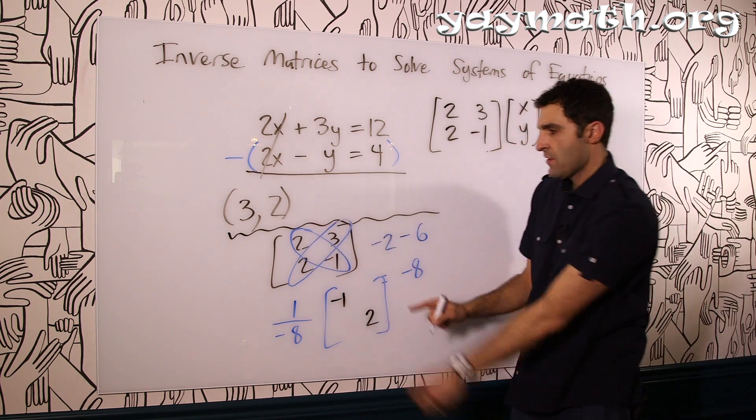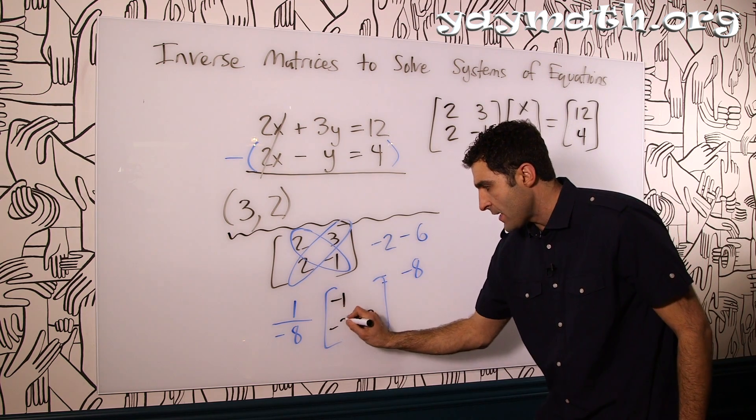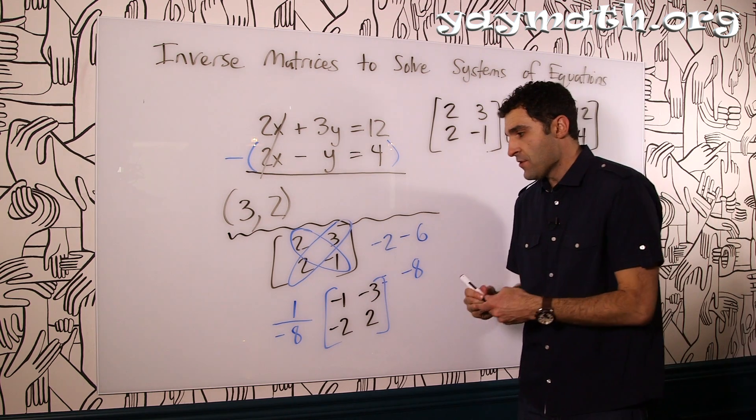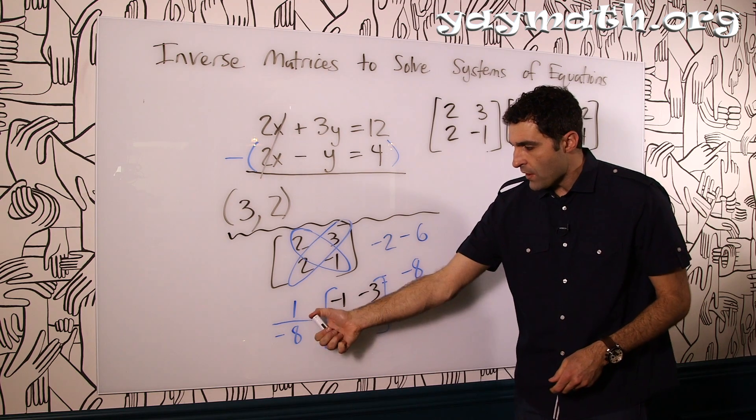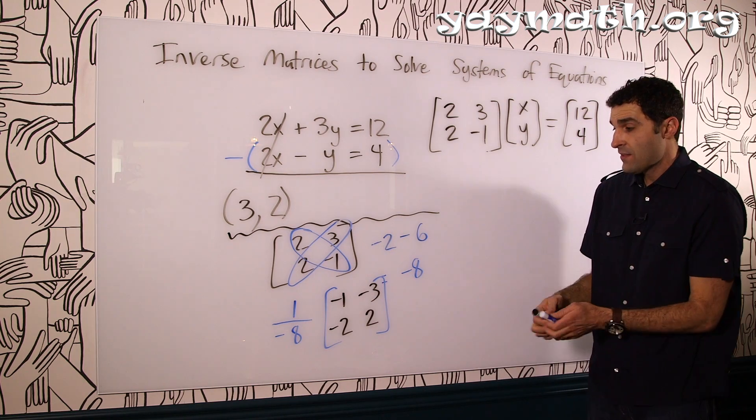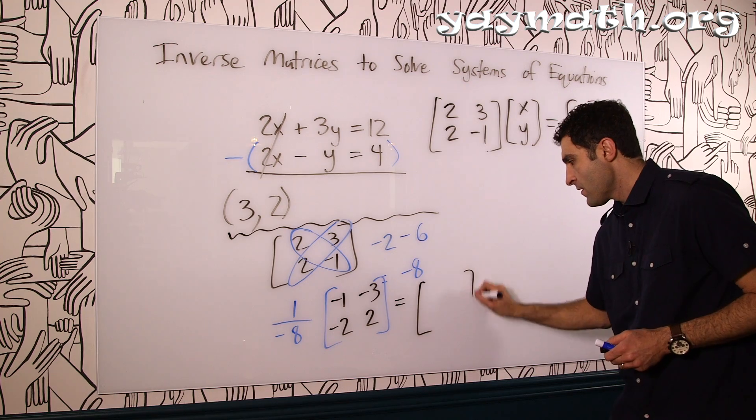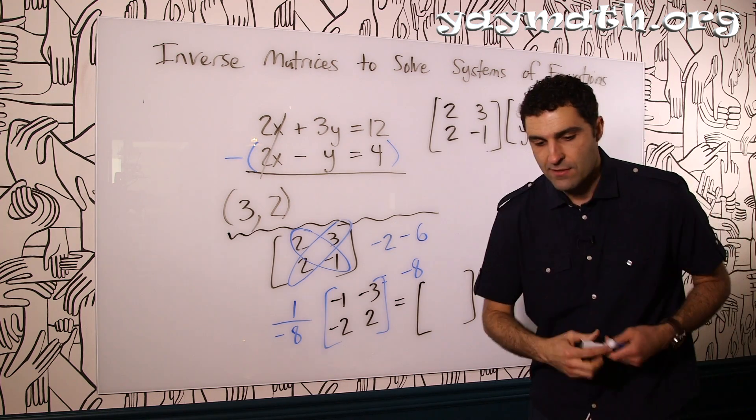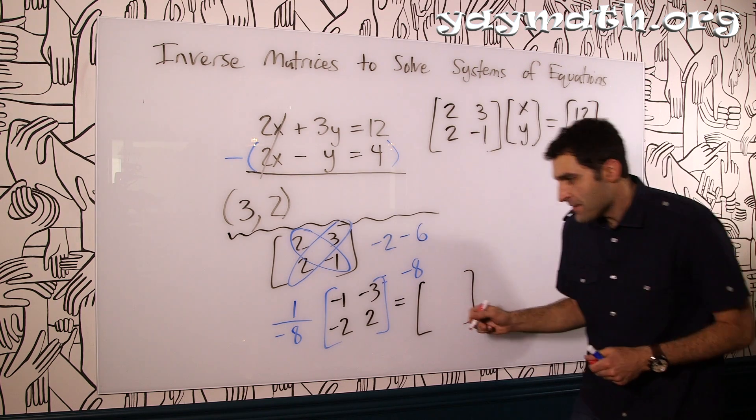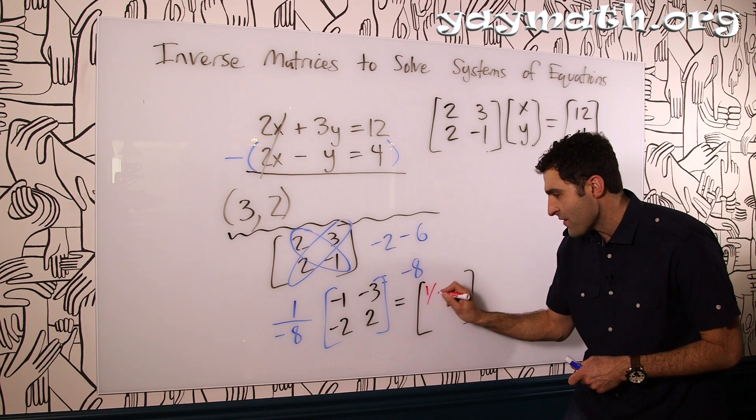Those are switched. And then for these guys, we just change their sign. So 2 becomes negative 2, and the 3 becomes negative 3. And what you can do is you can distribute this negative 1/8 inside here, and that becomes the inverse of this 2 by 2. Let's go ahead and do that. Once that 1/8 is distributed, or negative 1/8, we get new markers, fresh and clean. Negative 1/8 times negative 1 is 1 over 8.